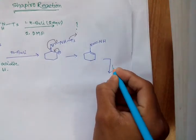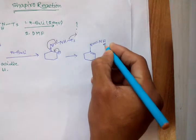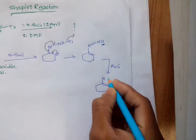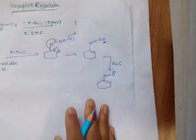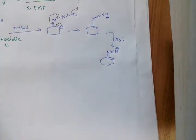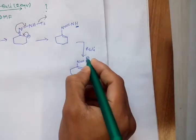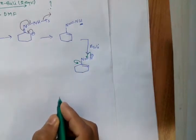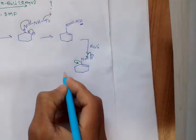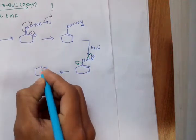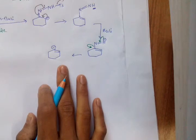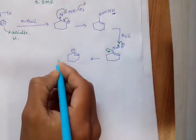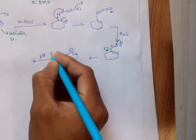Here again, butyl lithium abstracts this proton because this proton is acidic. When this negative charge falls here, the negative charge is located on the carbon atom and we get a carbanion — a carbon ionic system.